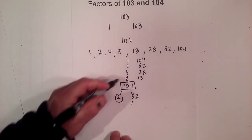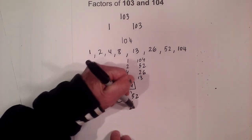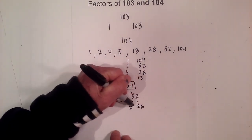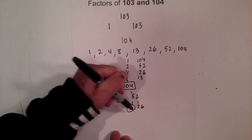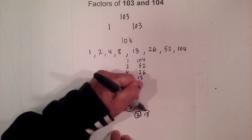Then 2 goes into 52, 26 times. Circle the 2 because it is prime. And now 2 times 13. Circle both of these numbers.